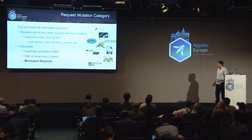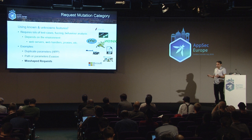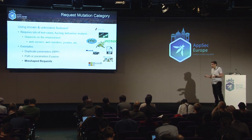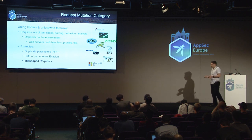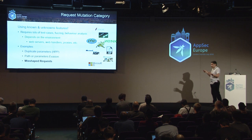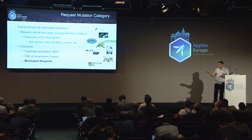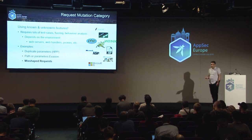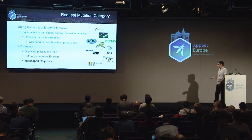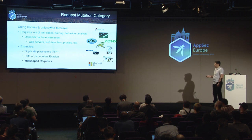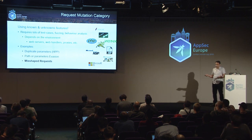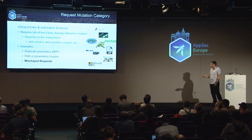What is request mutation? Web servers may act differently depending on how they receive requests. Something valid for one web server may not be valid for another because they've implemented things differently. When there are different features supported by web servers, you can find bypasses because WAFs can also implement them differently. HTTP parameter pollution — duplicating parameters — can be one such bypass. Directory traversal and similar techniques might also lead to bypasses if WAFs don't account for them.